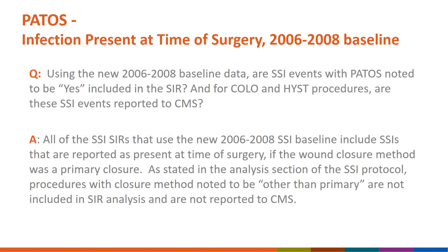Here are two other frequently asked questions. Using the 2006 to 2008 baseline data, are SSI events with PATOS marked yes included in the standardized infection ratio, or SIR, and for COLO and HIST procedures, are these SSI PATOS events reported to CMS? All SSIs reported as present at time of surgery are included in the SIR if the wound closure method is noted as a primary closure. Procedures with closure methods other than primary are not included in SIR analysis. All COLO and HIST procedures, which are primary closures, and their associated SSI events, are reported to CMS.